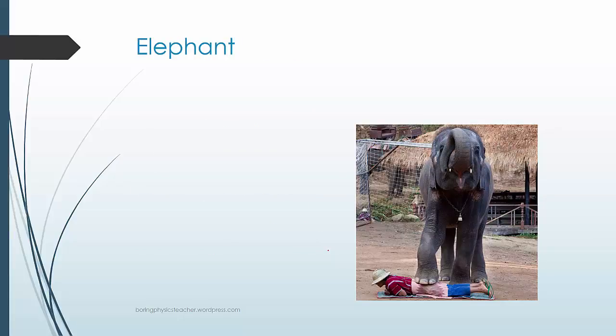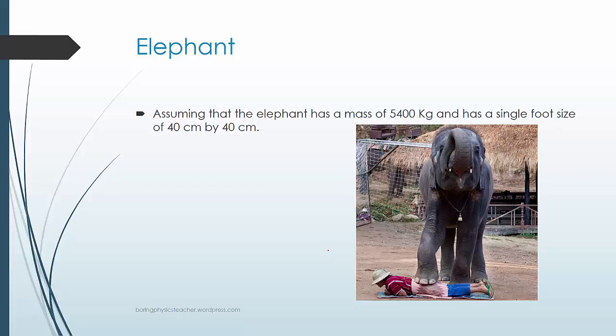You have this elephant that is stepping on this person. Assuming the elephant has a mass of 5,400 kg and has a single foot size of roughly about 40 by 40 cm. The elephant has a round feet, but let's just make an assumption that it's square for ease of calculation.